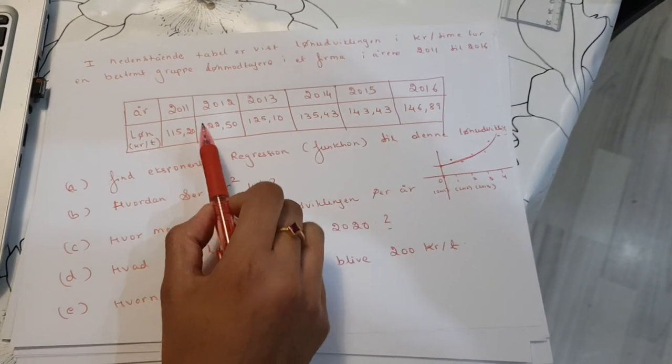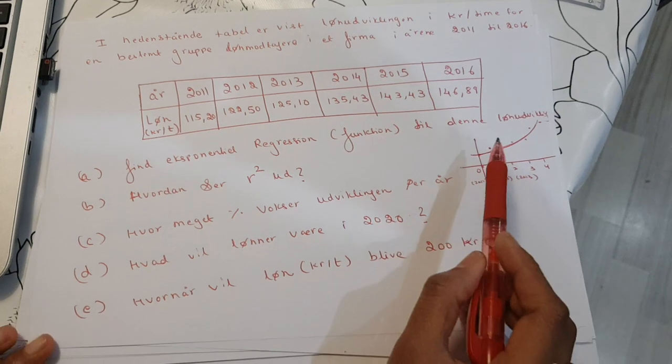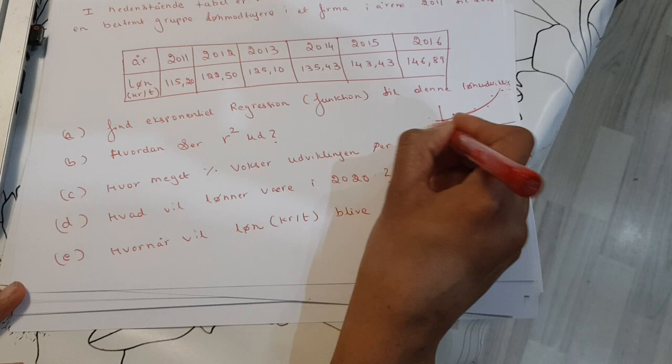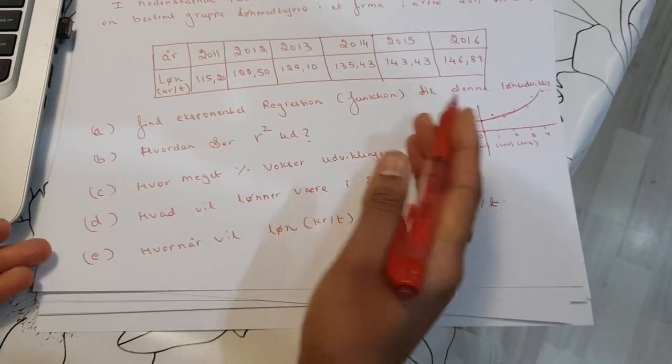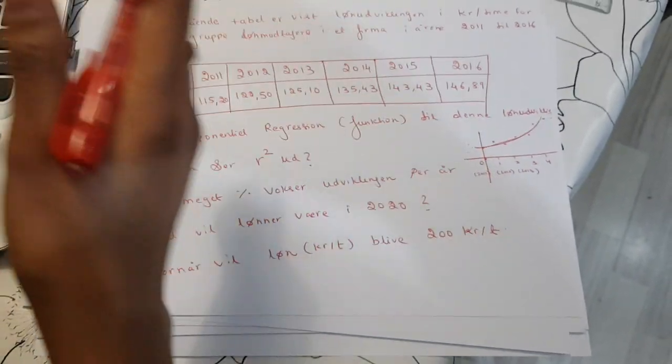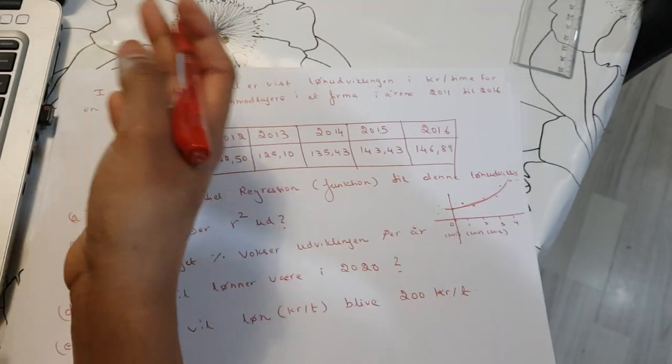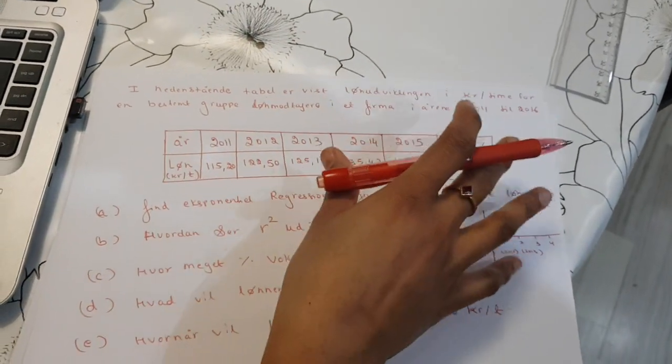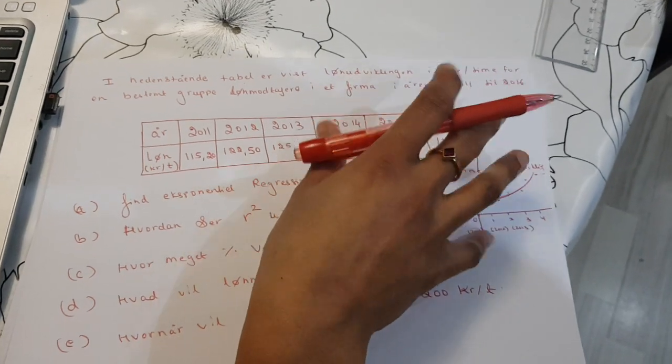But maybe it is like this. It doesn't fit perfectly to the function, but it is very tight as an exponential function. So you will set in an IT vector, it can be Maple, it can be GeoGebra, and see if it is very tight as an exponential function or not.